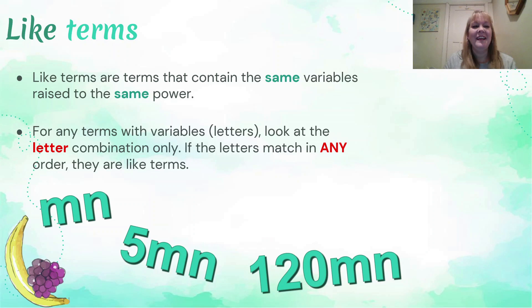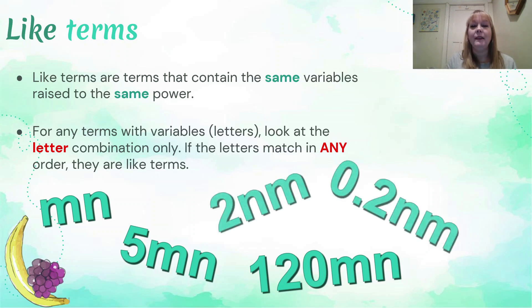Combinations are also important. So we've got mn, 5mn, 120mn. Once again, these are all like terms because they've got the same letter combination. If I had 5m by itself, it would not be a like term with 5mn, because it needs to have the m and the n to be a like term.